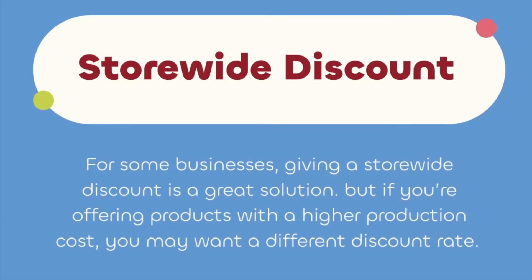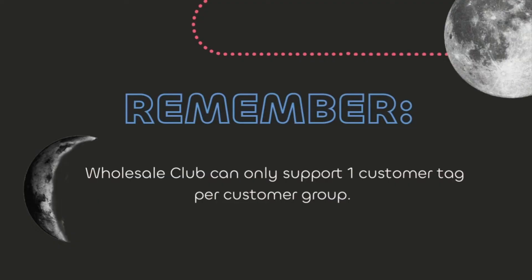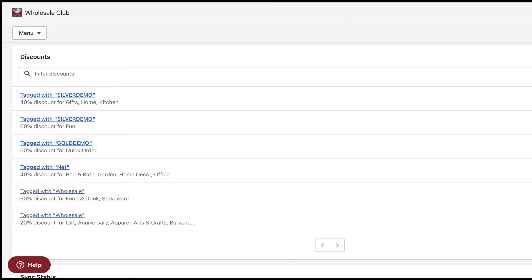For some businesses, giving a store-wide discount is a great solution, but if you're offering products with a higher production cost, you may want a different discount rate. For this, create a different discount in the app using the same tag. Wholesale Club can only support one customer tag per customer group, so if you're creating a second, third, or fourth discount for the same group, it's important to use the same customer tag. In this example, silver tagged customers get 40% off the gifts, home, and kitchen collection, and 60% off the fun collection.